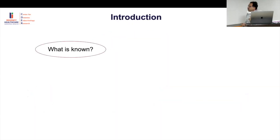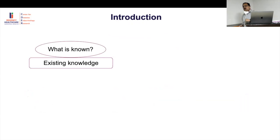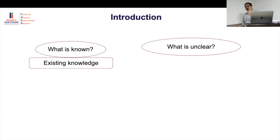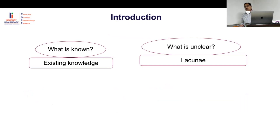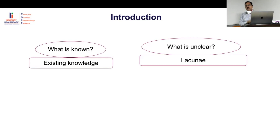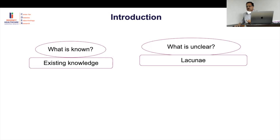Before planning or reviewing research, you need to know what is already known — existing knowledge and lacunae. Literature review should start before planning, not after writing. For example, if 100 studies already describe celiac prevalence in type 1 diabetes, repeating that is wasteful. Instead, identify specific gaps — like follow-up data on how many celiac patients develop type 1 — that add new value.